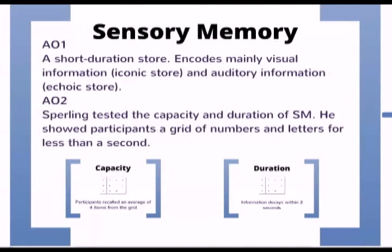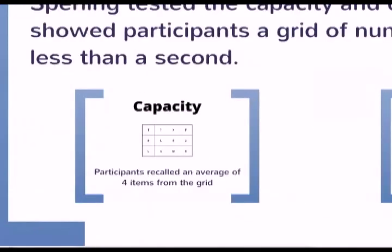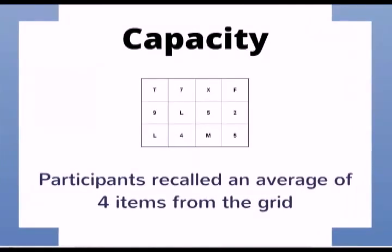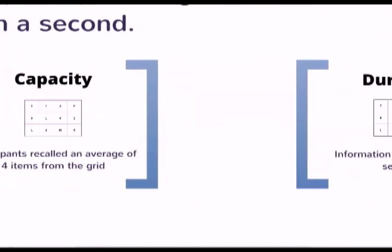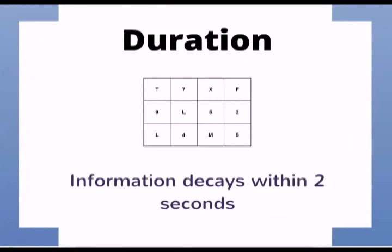Sensory memory can be seen as a short-duration store. It encodes mainly visual information — an iconic store — and auditory information, known as the echoic store. Supporting evidence for sensory memory comes from Sperling, who tested the capacity and duration of sensory memory. He showed participants a grid of numbers and letters for less than a second, and found that participants recalled an average of four items from the grid, and that information decays within about two seconds.